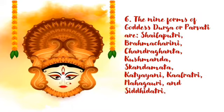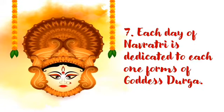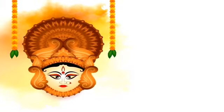The 9 forms of Goddess Durga or Parvati are Shailputri, Brahmacharini, Chandraghanta, Kushmanda, Skandamata, Katyaayani, Kaleratri, Mahagauri, and Siddhidatri. Each day of Navaratri is dedicated to each one of the forms of Goddess Durga.